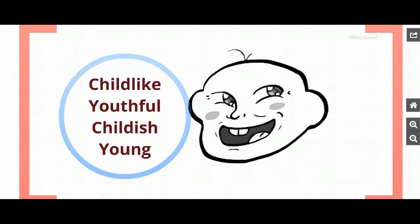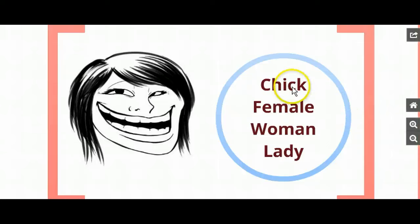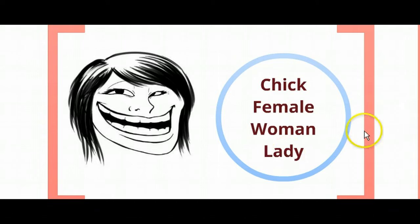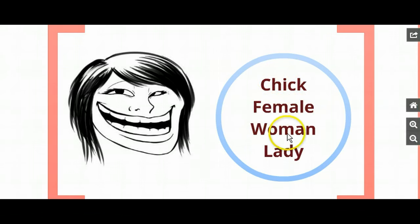Let's try it again. Look at these four words that basically mean the same thing and think about the different feelings you associate with them. Go ahead and pause the video. So we have: chick, female, woman, and lady. Most of us would agree that 'chick' is the most negative connotation and maybe 'lady' or 'woman' is a more positive connotation. You can see each one of these words has different feelings associated with them.